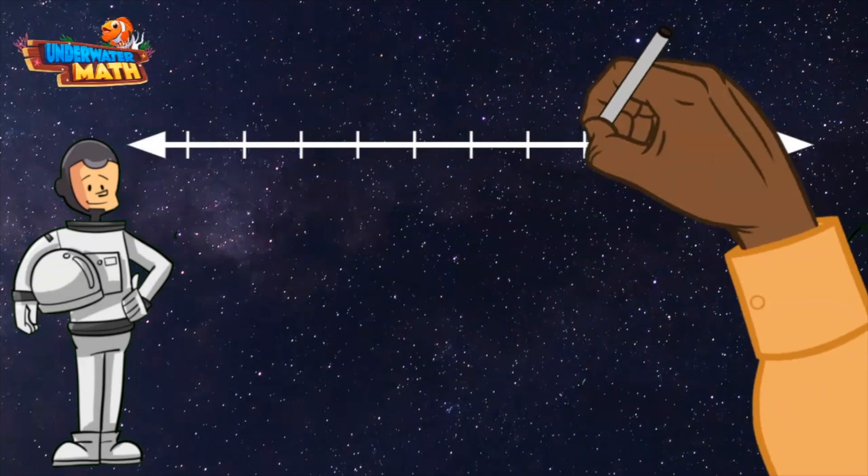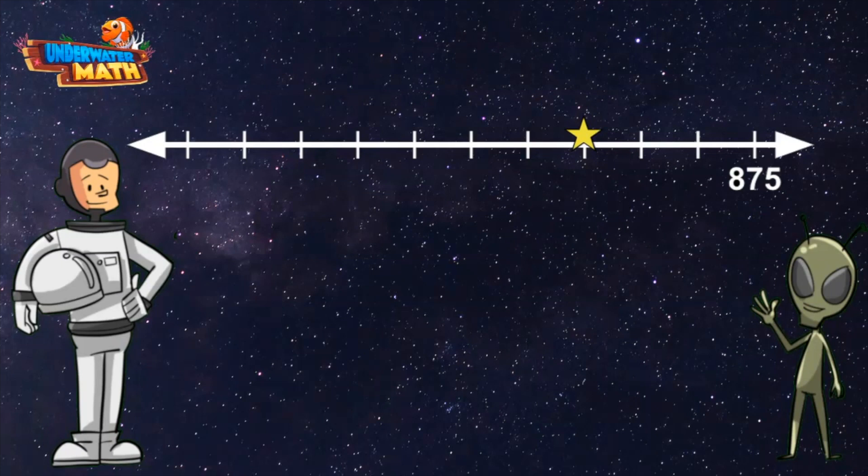Wait a minute Lenny, this number line only shows one number. Oh man, okay, we've got this. Since the number is at the end of the number line, I know I need to count backward until we reach the star.